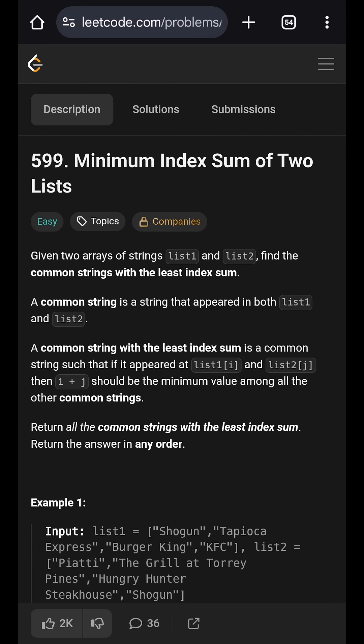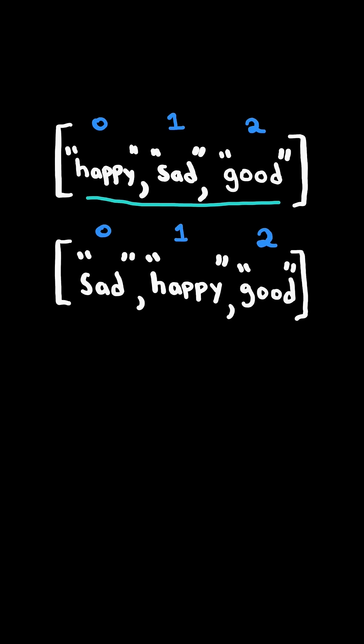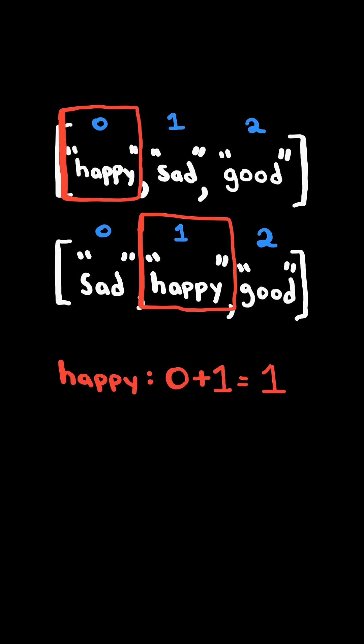Minimum index sum of two lists. All the strings in list 1 are unique and all the strings in list 2 are unique. Find common strings between the two lists and add up the indices they appear in.